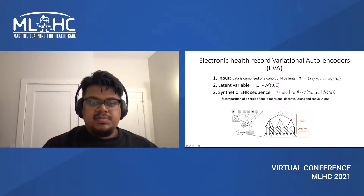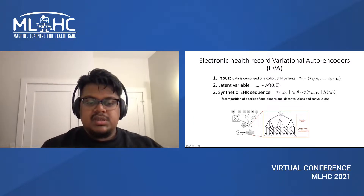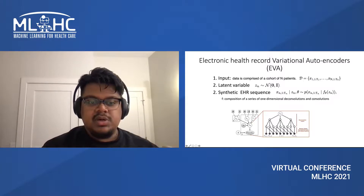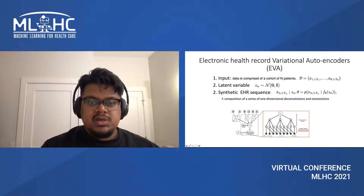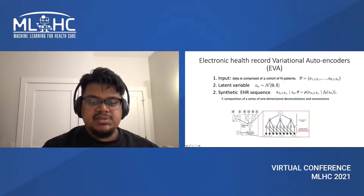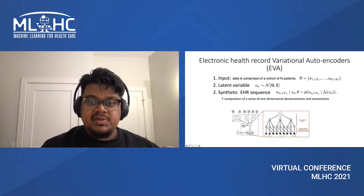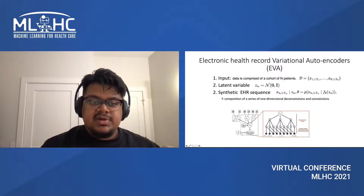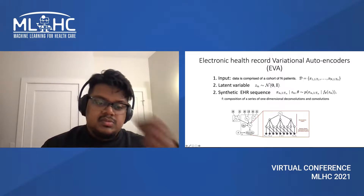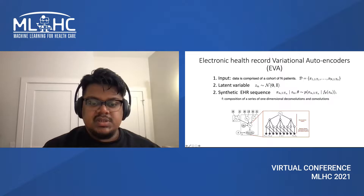For that, we present EVA, which is a variational autoencoder — a combination of a latent variable model and amortized variational inference. The input for this model is a selection of N patients, where each patient is represented as a variable-length collection of visit vectors, and each visit vector is encoded as the presence or absence of ICD codes. We use a latent variable C, which is typically endowed with standard Gaussian priors.